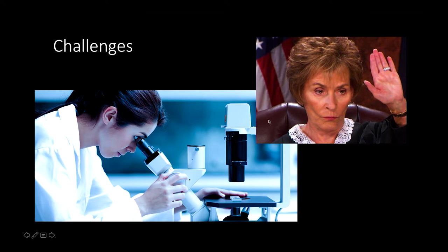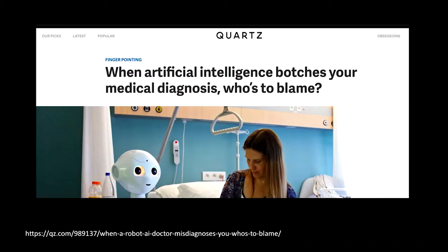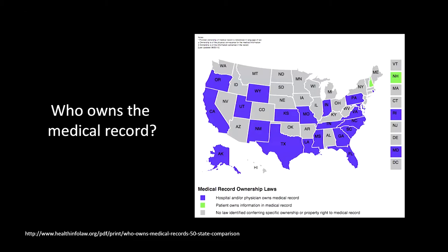Just a couple of challenges and hot topics to think about, not something we're going to dive into today. A very big one: if you put a machine learning algorithm in place as a diagnostic tool, who's going to be to blame if it makes a mistake? What are the medical, legal, and malpractice risks involved? We're asking ourselves the same question when it comes to autonomous vehicles. There's also a lot of ambiguity about who actually owns the medical record. In California, the hospital or the physician actually owns the data in the medical record, but that's not the case in all states. There are a lot of privacy issues and legal compliance issues around creating these big datasets.